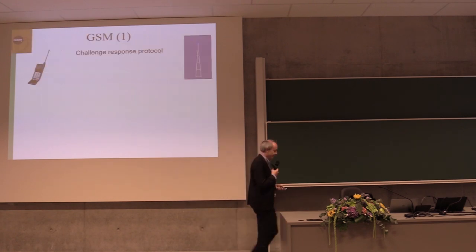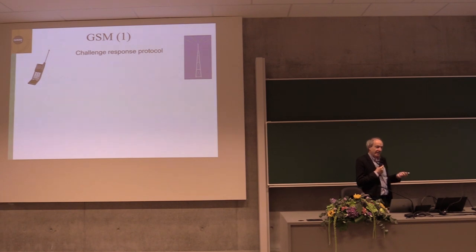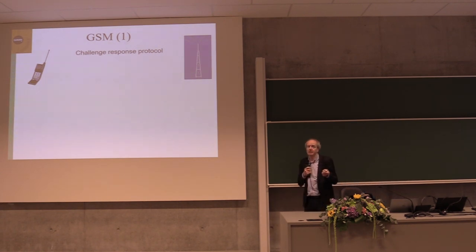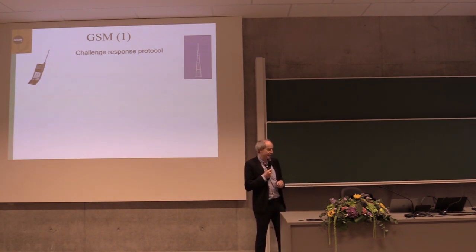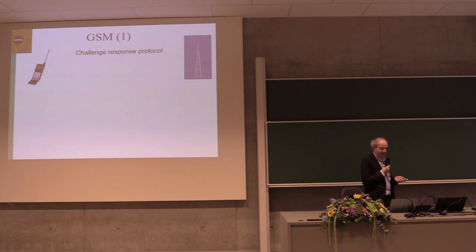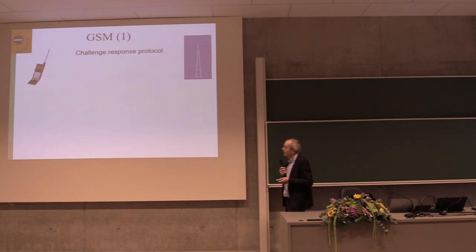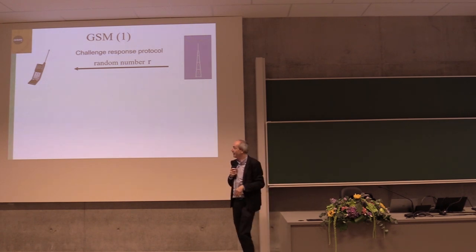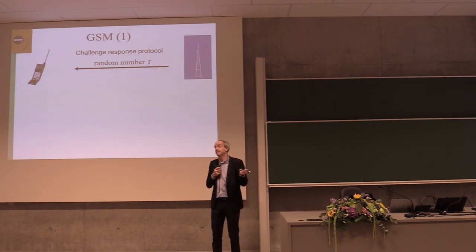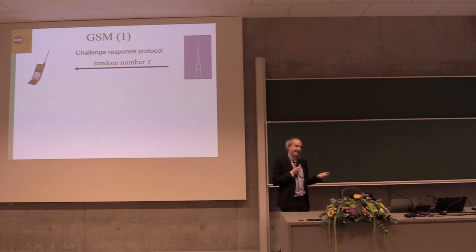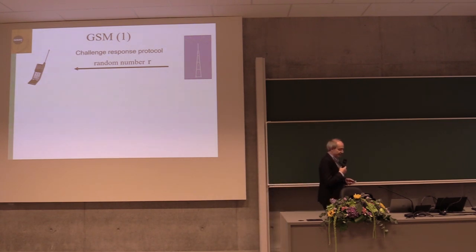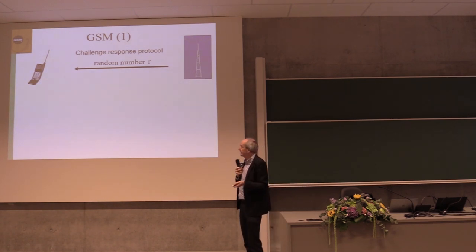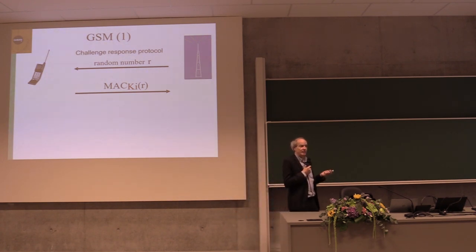A simple example you use every day: the GSM protocol — the same protocol is also used in 3G and 4G. You have the base station and your mobile phone. There's a key not in the base station but in the authentication center at the mobile operator, and a key not in the mobile phone but in the SIM card — the operator doesn't trust the manufacturer. A random number is sent to the mobile phone, goes to the SIM card, and a MAC is computed using the key called KI.